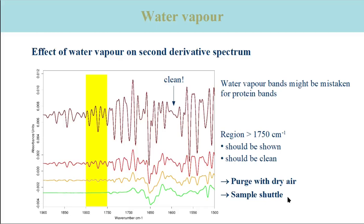There is a small region around 1600 reciprocal centimeters which is free of water vapor bands. Note also that there are no bands in the protein spectrum above 1750 reciprocal centimeters. These two characteristics can be used to identify water vapor bands in infrared spectra of proteins. Sharp bands everywhere except around 1600 reciprocal centimeters indicate water vapor bands. In contrast, the absence of sharp bands above 1750 reciprocal centimeters demonstrates little impact of water vapor on the spectrum.